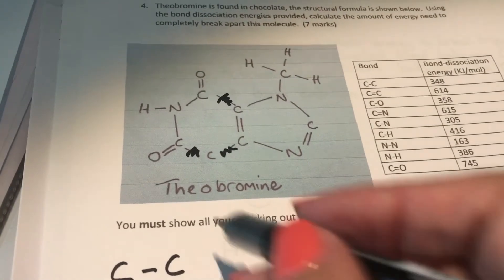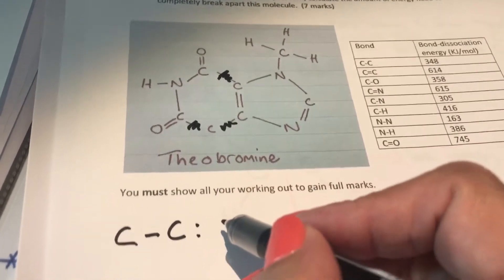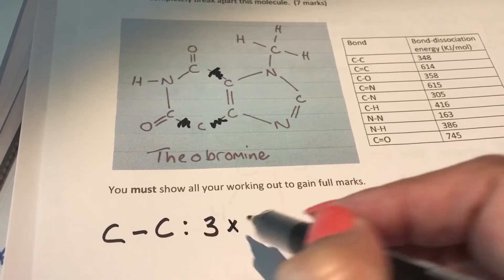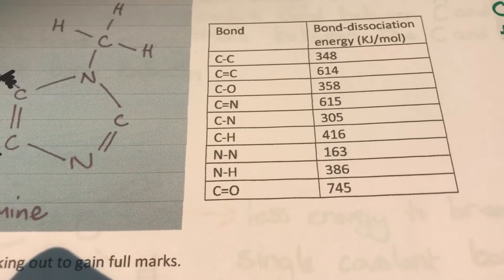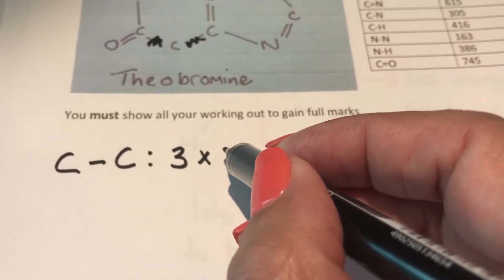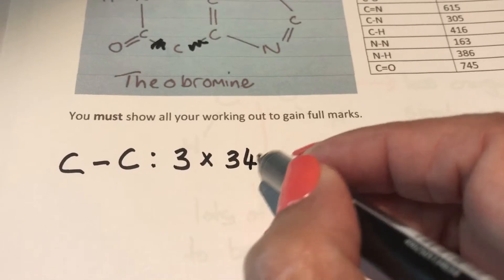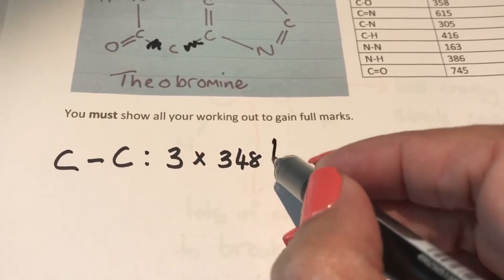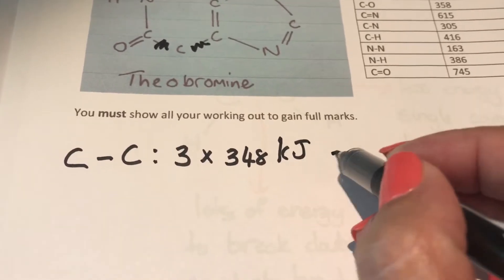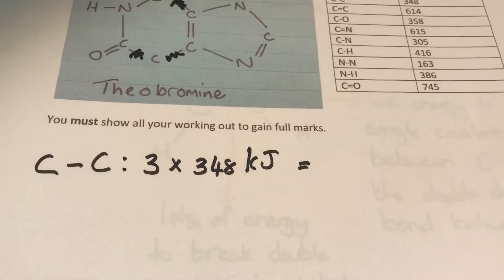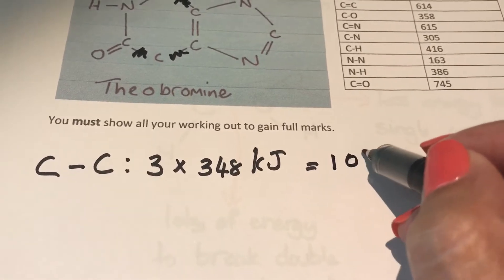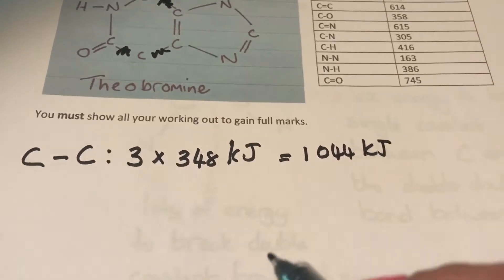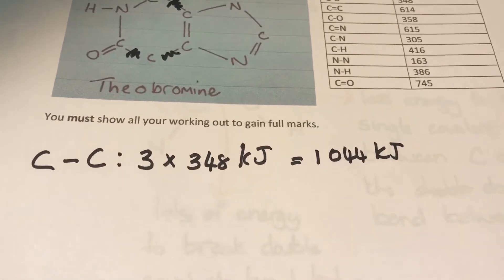I don't see any more, so that means carbon-carbon I have three bonds. I'll go to the table and look up my carbon-carbon bond value and I see it's 348 kilojoules. So it's three times 348 kilojoules, and when I multiply that out I see that my answer is 1044 kilojoules.